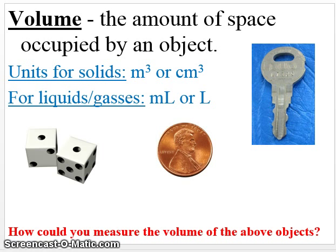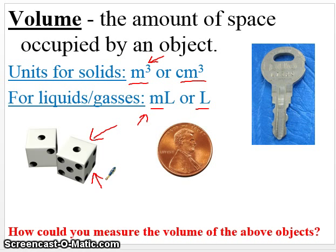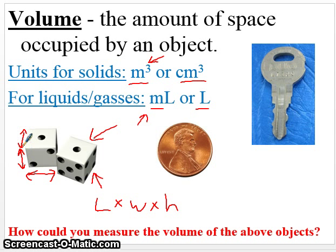Volume is also an important measurement in chemistry — it's the amount of space occupied by an object. For solids, we'll use meters cubed or centimeters cubed. For liquids, we'll use milliliters and liters. To measure the volume of a die, you can measure its length, width, and height and multiply the three together, since the volume of a cube is length times width times height.